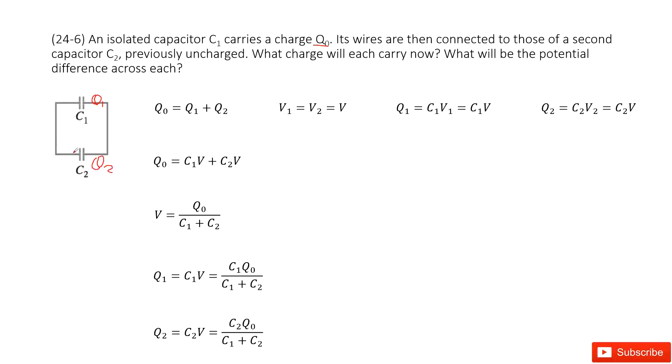When does it stop flowing? When the potential difference for these two equals. So that means that initially the charge Q0 equals the final charge Q1 plus Q2. And the final potential difference is equal for C1 and C2, so that makes V1 equal to V2 equal to V.